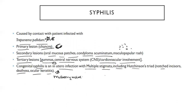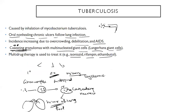In syphilis: primary lesion is oral canker; secondary lesion shows warts, maculopapular rashes, and mucosal patches; tertiary lesions show gummas and CNS and CVS involvement. Congenital syphilis — very important feature is Hutchinson's triad: notched incisors, deafness, mulberry molars, and ocular keratitis.